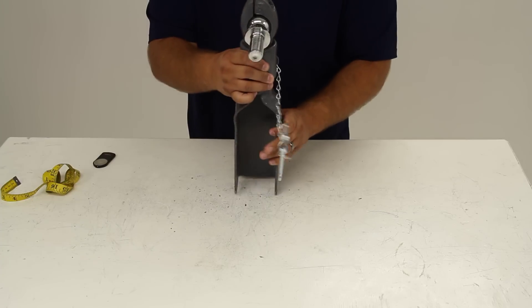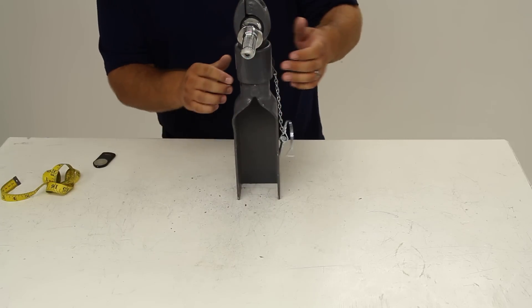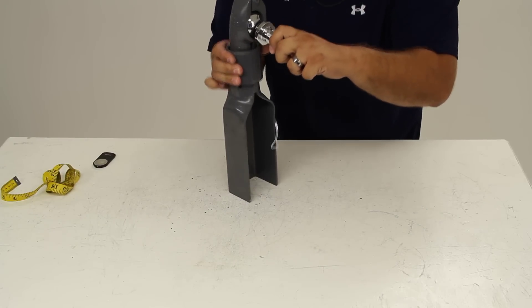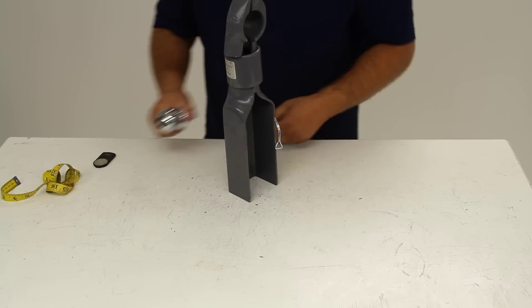To release the ball, we'll just reverse the process. Again, the pin's removed so we can slide our collar back. The wedge opens up, and the ball is free.